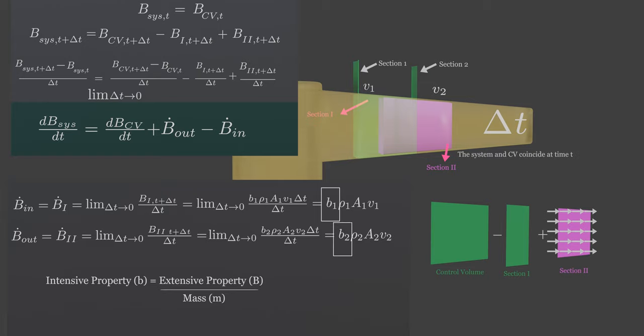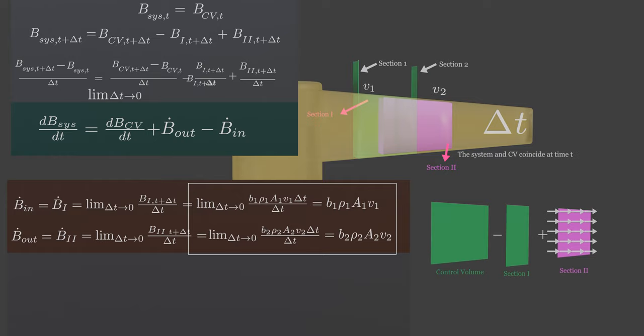Here's small b is the intensive property. If you divide extensive property by mass, you get intensive property. If you are still confused about how this equation arrived, then remember, extensive property is mass times intensive property but mass is density times volume and volume is area times velocity.